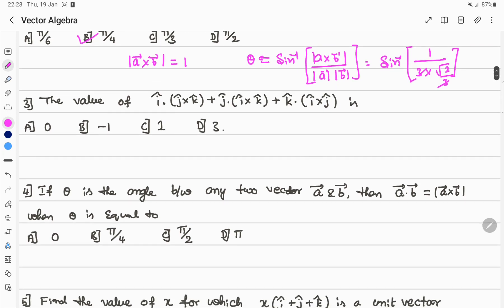Next question: i dot j cross k is given. So here j cross k is given.